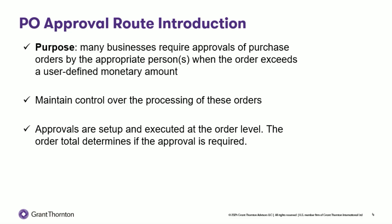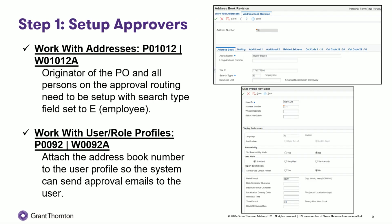Next, we'll look at step number one. The first step to setting up these PO approval routes is setting up approvers in the system. In the Work With Addresses program, the originator of the PO and all persons on the approval routing need to be set up. Next, in the Work With User Profiles program, attach the address book number to the user profile so the system can send approval emails to the user.